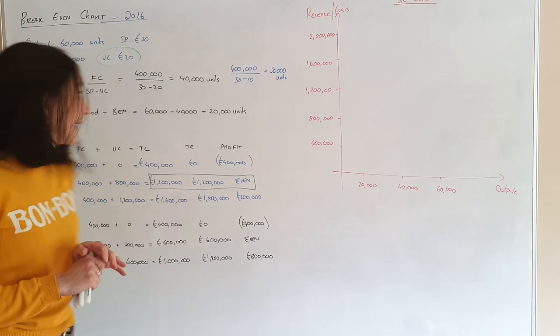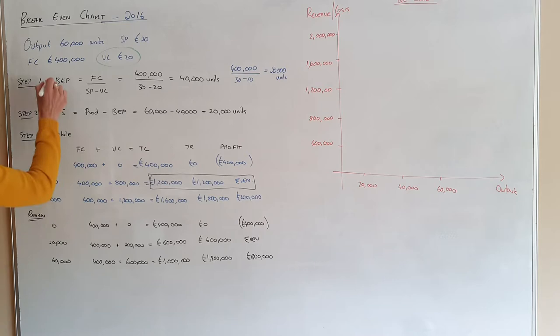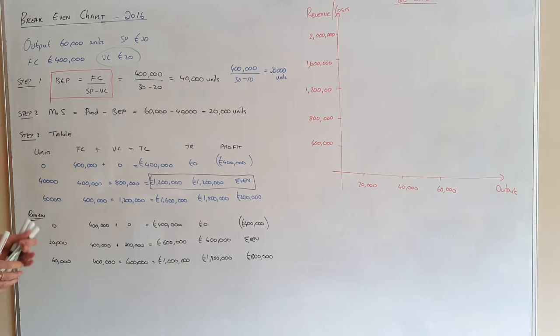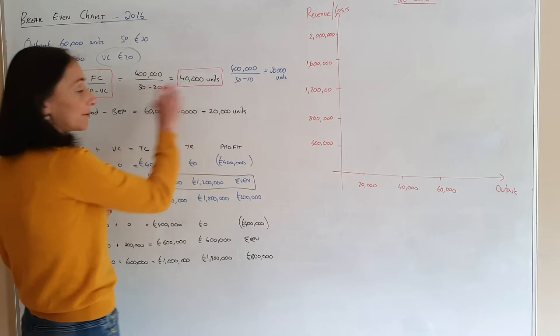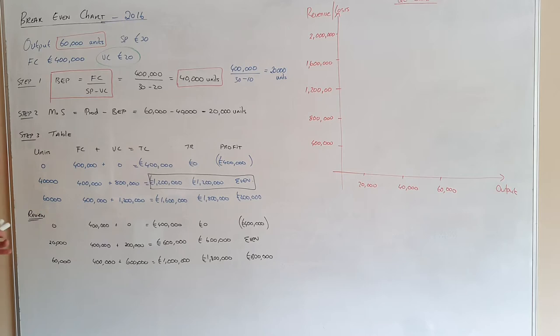Step one: always calculate your break-even point. You cannot do this unless you know your formula, so that has to be learned. It's your fixed costs divided by selling price minus variable costs. We get 40,000 units. When we're going to be doing our graph, those units are going to be important.